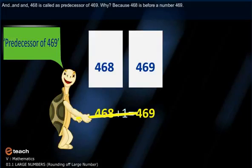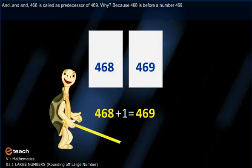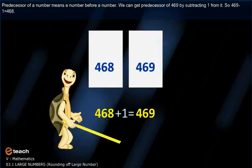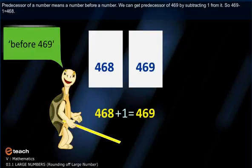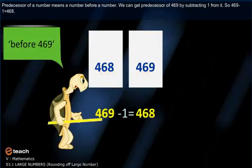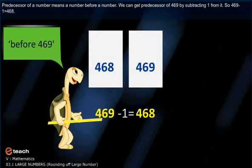Four hundred sixty-nine is a successor of four hundred sixty-eight. And four hundred sixty-eight is called a predecessor of four hundred sixty-nine. Because four hundred sixty-eight is before four hundred sixty-nine. Predecessor of a number means a number before a number. We can get the predecessor of four hundred sixty-nine by subtracting one from it. So, four hundred sixty-nine minus one is equal to four hundred sixty-eight.